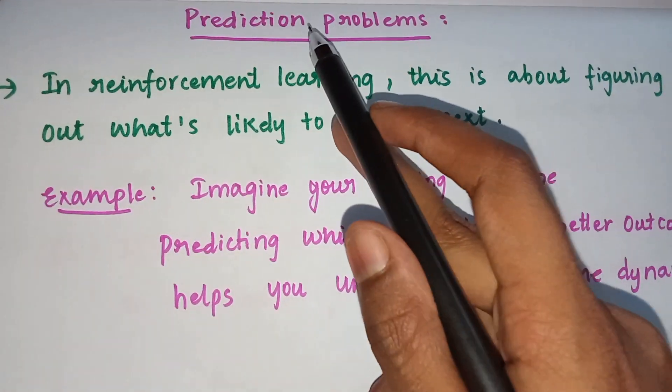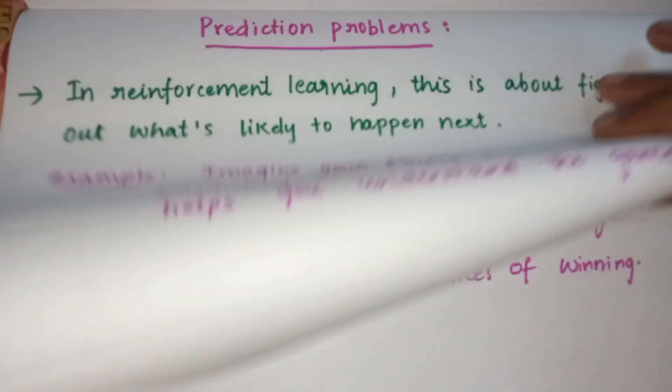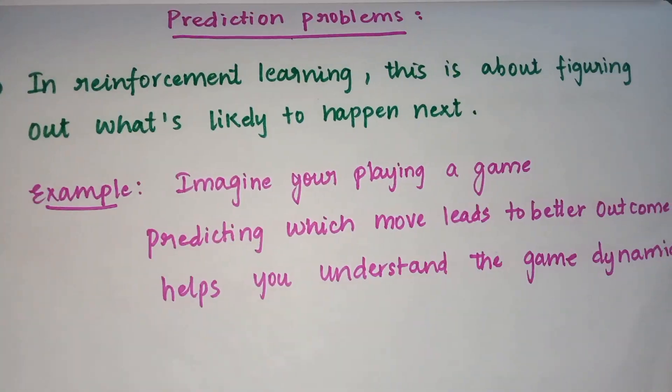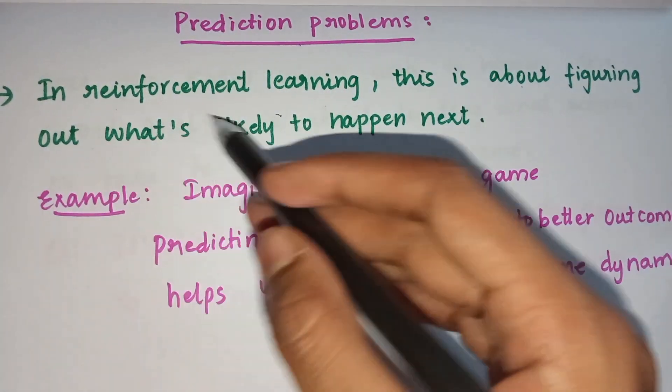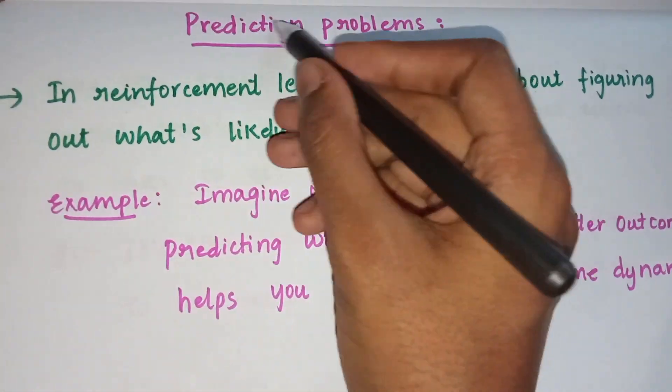Hello everyone, in this video we'll see what are prediction problems and control problems. Prediction problems in reinforcement learning are about figuring out what's likely to happen next. Usually prediction meaning is only that.